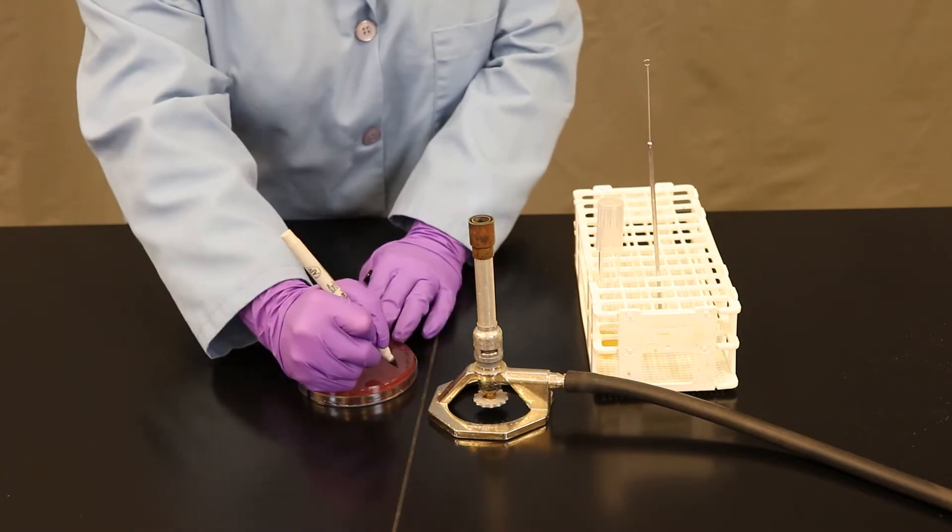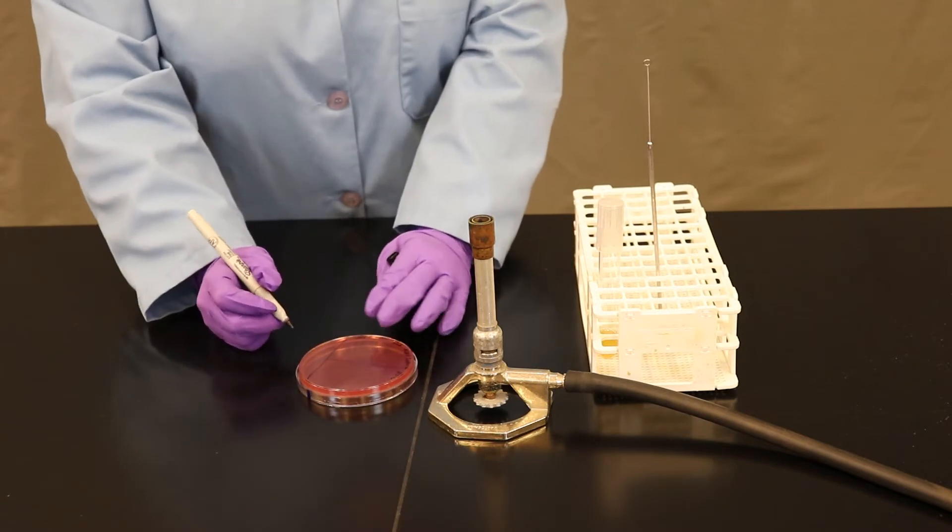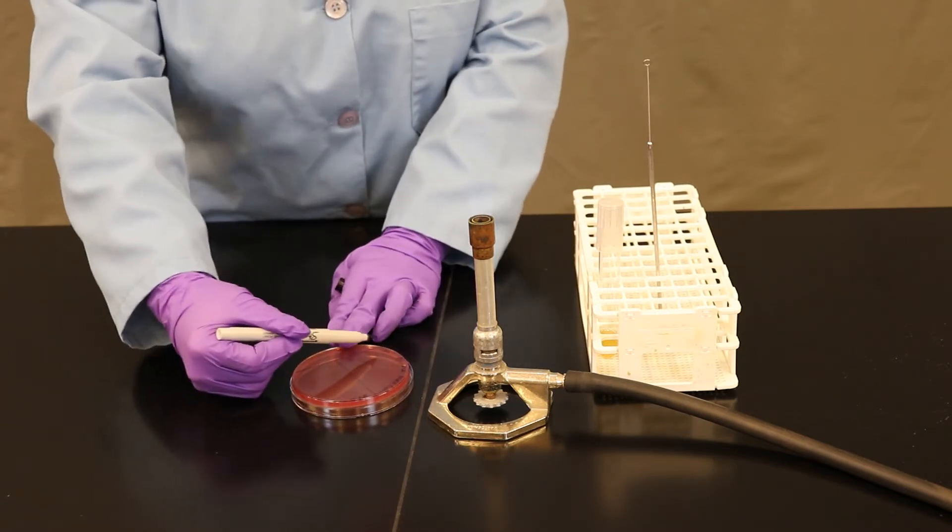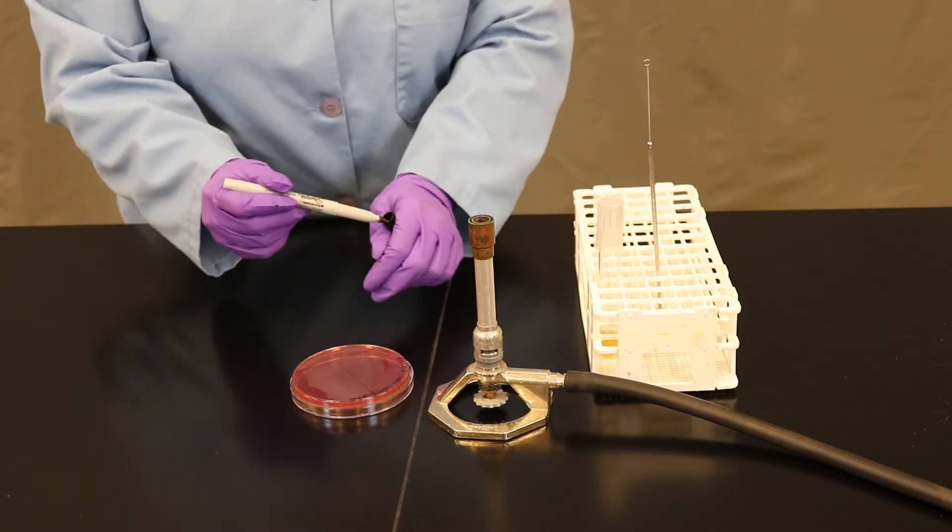And in some cases you can indicate the temperature you're going to incubate at. For us, we're going to use 37 degrees Celsius. Notice that I'm going to label my plate around the edge, as to not obstruct my view in the center of the petri plate.